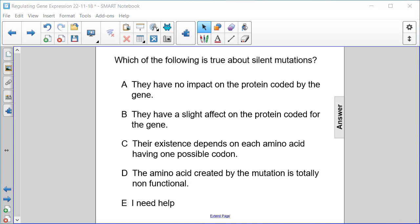Which of the following is true about silent mutations? A, they have no impact on the protein coded by the gene. B, they have a slight effect on the protein coded for the gene. C, their existence depends on each amino acid having one possible codon. Or D, the amino acid created by the mutation is totally non-functional.